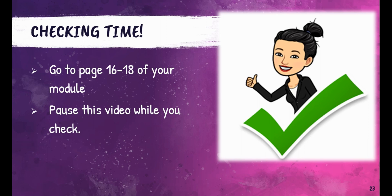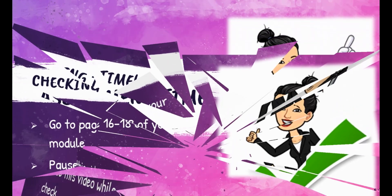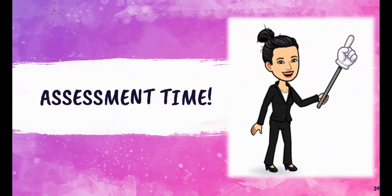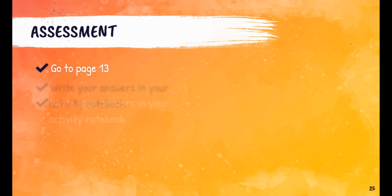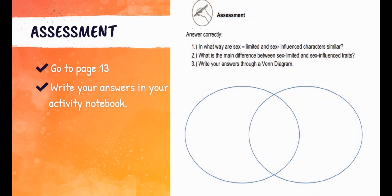It's assessment time! Go to page 13 and answer the assessment. Write your answers in your activity notebook. Number 1: In what way are sex-limited and sex-influenced characters similar? Number 2: What is the main difference between sex-limited and sex-influenced traits? Show your answer by using the Venn diagram below. Good luck!